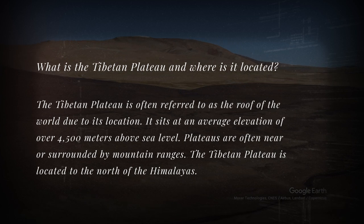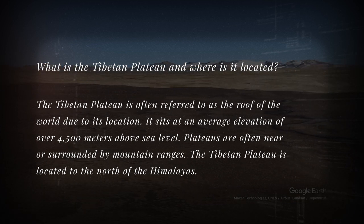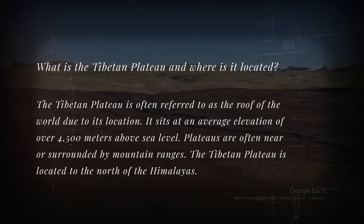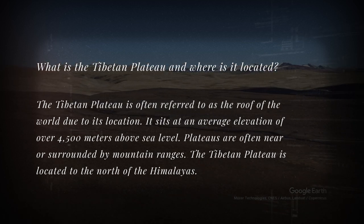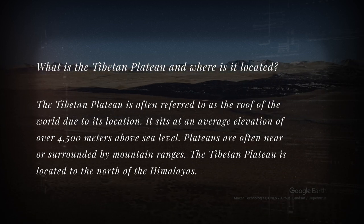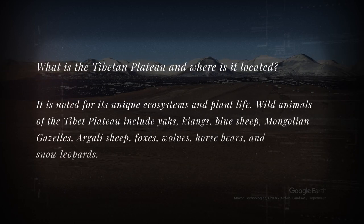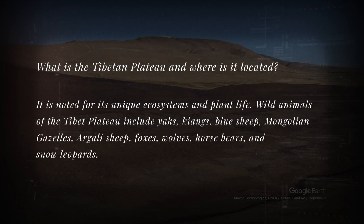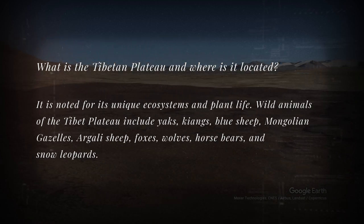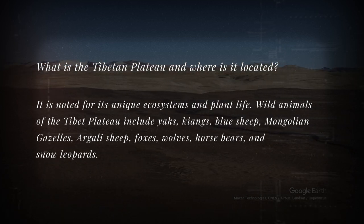What is the Tibetan Plateau and where is it located? The Tibetan Plateau is often referred to as the roof of the world due to its location. It sits at an average elevation of over 4,500 meters above sea level, located to the north of the Himalayas. It is noted for its unique ecosystems; wild animals include yaks, kiangs, blue sheep, Mongolian gazelles, argali sheep, foxes, wolves, horses, bears, and snow leopards.